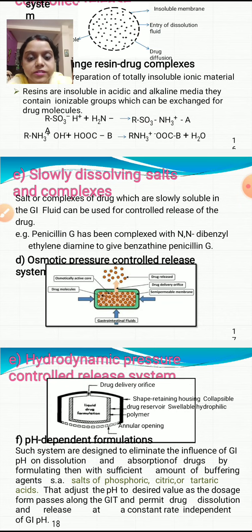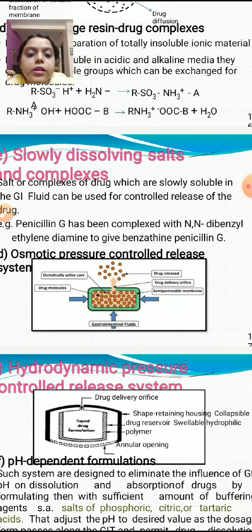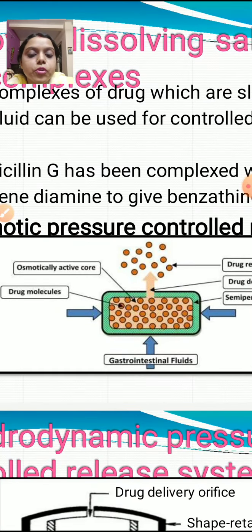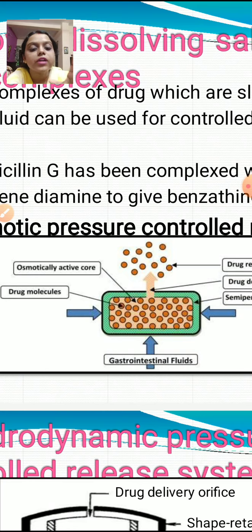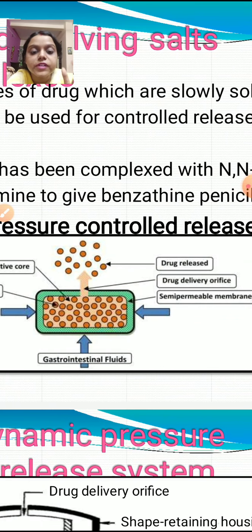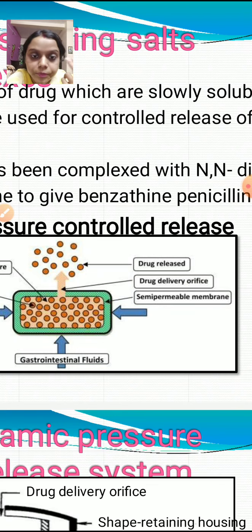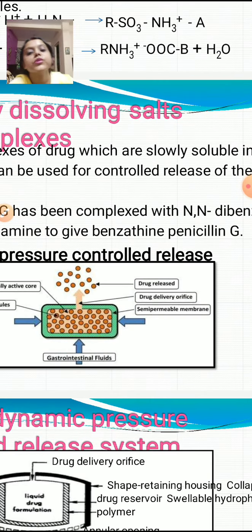In the osmotic pressure controlled release system, as shown in the diagram, there is an osmotically active core containing drug molecules. Gastrointestinal fluid enters from three sides through a semipermeable membrane. After entering, the drug is released through a drug delivery orifice, as the semipermeable membrane acts as a barrier between the drug molecules and the gastrointestinal fluid.